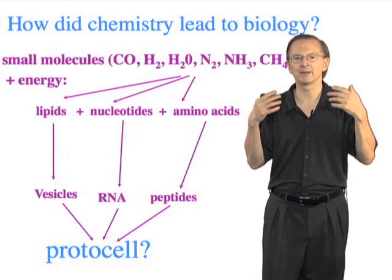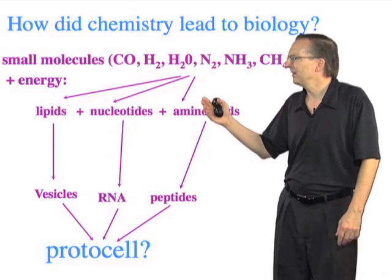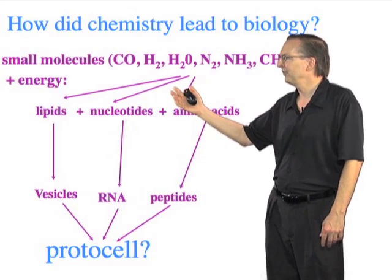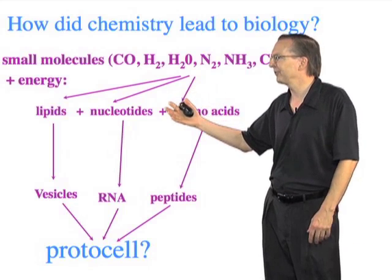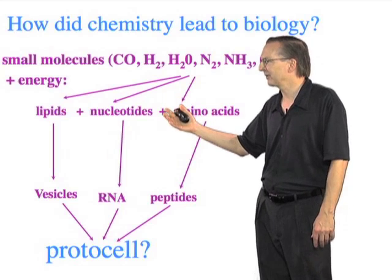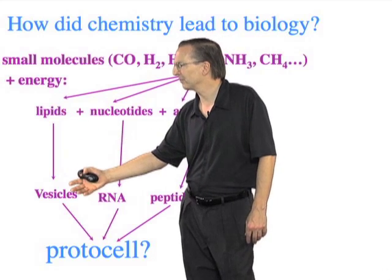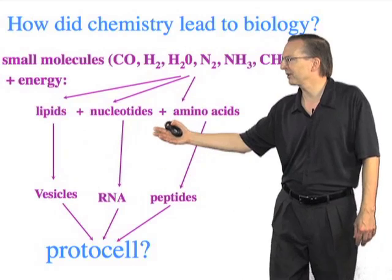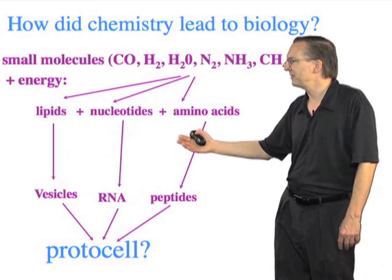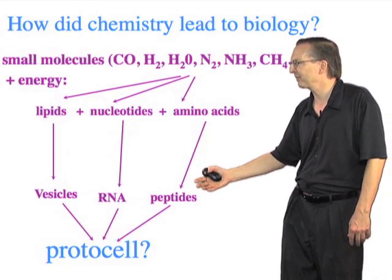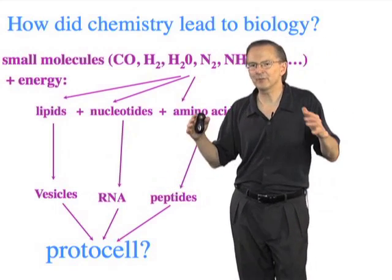Those atoms can then recombine to generate high-energy intermediates with multiple bonds — molecules like cyanide and acetylene, formaldehyde, and so on. These molecules can then start to interact with each other and gradually build up more complex intermediates, ultimately leading to the things we really care about: the lipids that will make membranes and vesicles, the nucleotides that will assemble into genetic molecules like RNA, and amino acids that can assemble into peptides, which may also play roles in primitive cells.